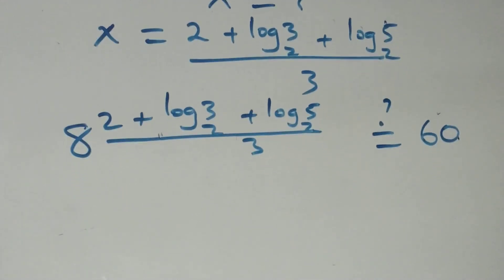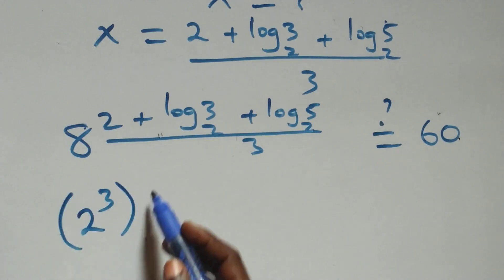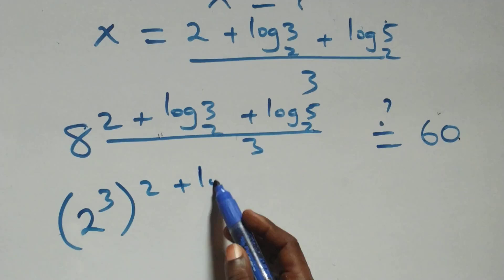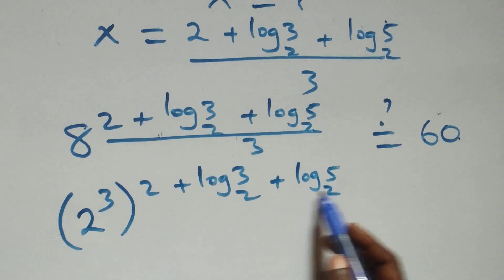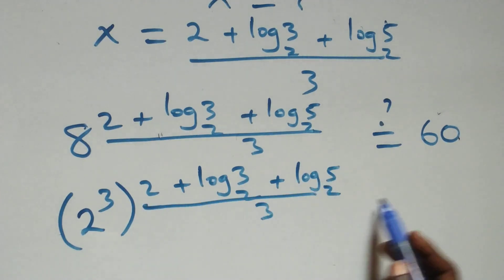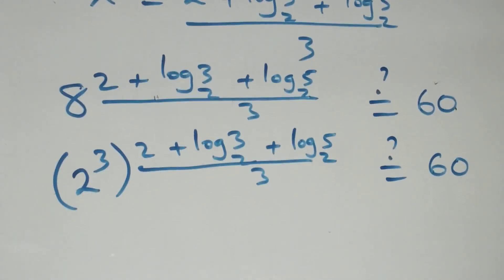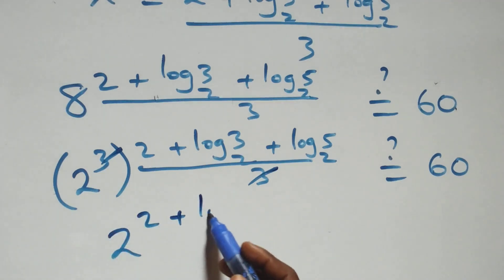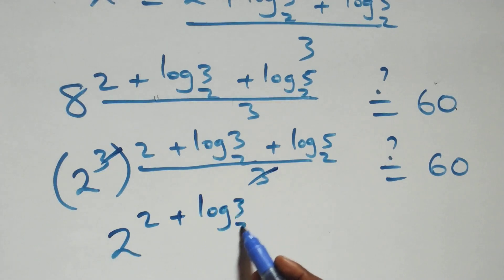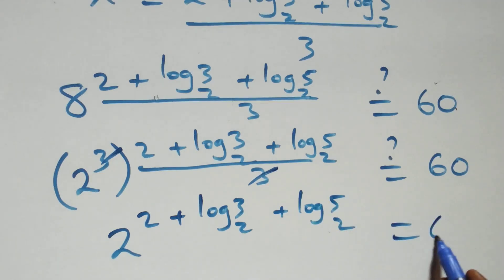We rewrite 8 as 2 cubed, so we have 2 cubed raised to power (2 plus log 3 base 2 plus log 5 base 2) all over 3. The 3 in the power and the 3 from the exponent cancel each other, and we are left with 2 raised to power (2 plus log 3 base 2 plus log 5 base 2) equals 60.